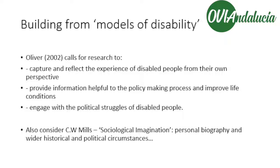The social model has been an attempt to distinguish between how society is organised — which creates conditions of marginalisation — and the way that our body operates, the way we process information, or aspects of our mental health. What the models are doing is trying to position where the problem of disability is, who has responsibility for it, and how do we address it. The social model, the medical model, the tragedy model, and the charity model are all positioning disability and the response to it in particular places — either in the responsibility of the individual, or in the responsibility of the way society is organised.